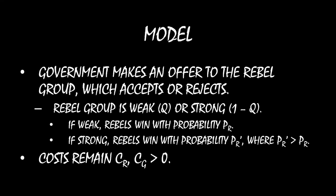In this model, the government is going to make an offer to the rebel group, which the rebel group accepts or rejects — very similar to last time. The government makes an ultimatum offer; accepting implements that settlement, rejecting ends up with war. Now, the rebel group could either be strong or weak. The probability of the rebel group being weak is Q, and the probability that the rebel group is strong is 1 minus Q. So the rebel group knows whether it's weak or strong, but the government just knows the relative likelihood of each case.